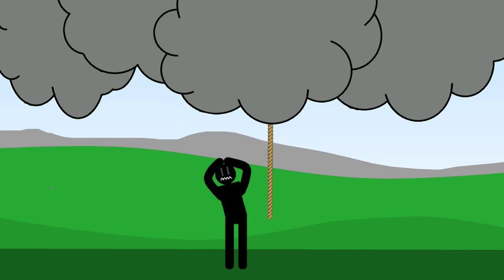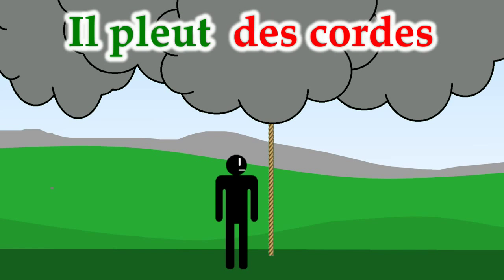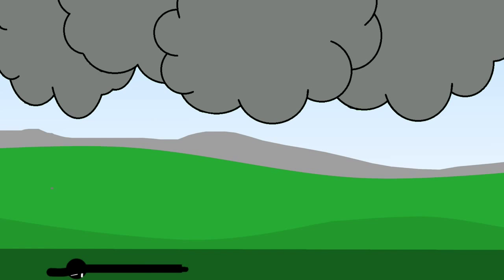Anyway, the French conjure a slightly different imagery by saying, Il pleut des cordes. Which means, It's raining ropes. Not a phrase you want to trip up on.